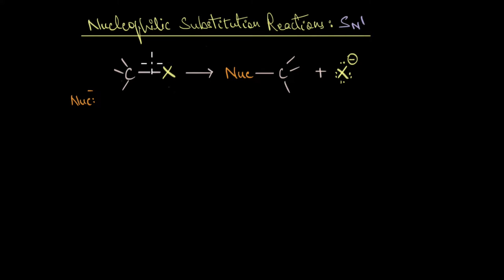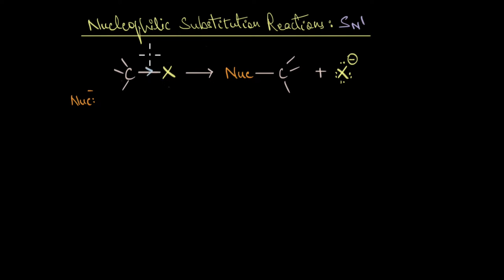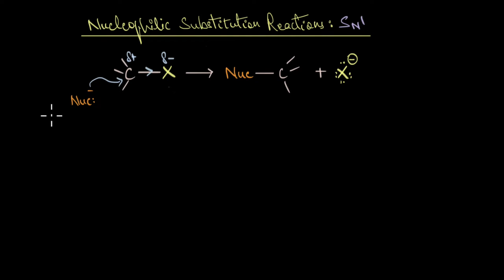One of the important reactions undergone by haloalkanes is nucleophilic substitution reactions. Haloalkanes form excellent substrates for these reactions, primarily because of the polar nature of the C-X bond. Halogens are highly electronegative and draw electron density towards themselves, so the carbon gets a partial positive charge and halogens get a partial negative charge. That is why the carbon becomes a very good electrophilic center and a suitable substrate for a nucleophilic attack.